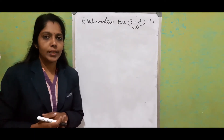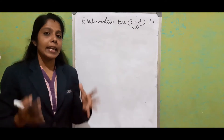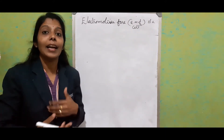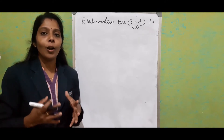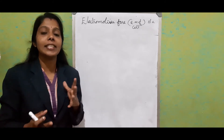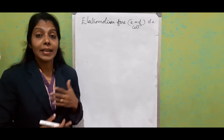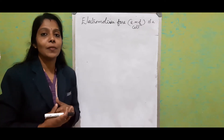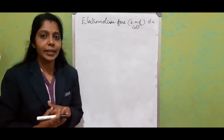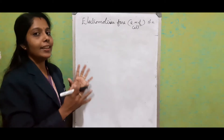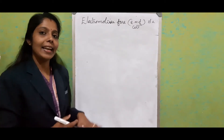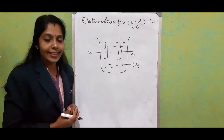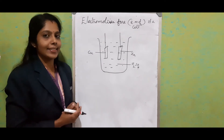We know what a cell is. Inside a cell there will be an electrolyte, and the cell always maintains a potential difference by chemical reactions to maintain a continuous flow of current. In chemistry you studied about the electric cell and how to make an electric cell.